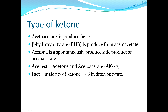Basically we have three types of ketone in the body. Acetoacetate is produced first. Beta-hydroxybutyrate is produced from acetoacetate. And acetone is a spontaneously produced side product of acetoacetate.